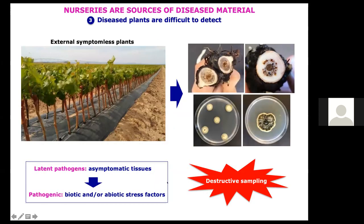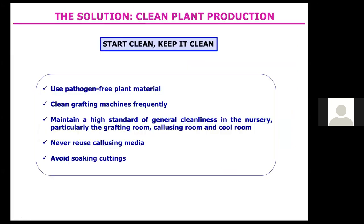It is often difficult to detect trunk disease-infected plants in the nursery. It is frequent to see in field nurseries high-quality planting material with no physical defects, no foliar symptoms, a healthy and strong graft union, appropriate length and thickness of the rootstock with at least three to four buds, and healthy, evenly distributed roots. However, when we cut this plant at the base of the rootstock, we frequently appreciate necrosis from which we frequently isolate fungal trunk pathogens. These fungi can act as latent pathogens and may become pathogenic following biotic and/or abiotic stress factors.